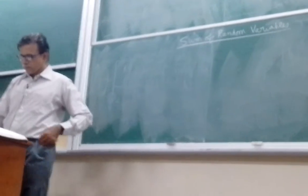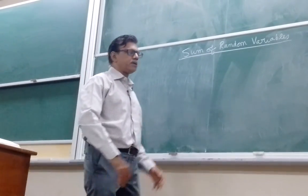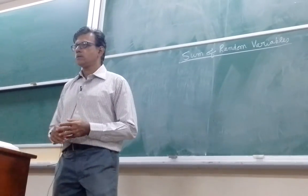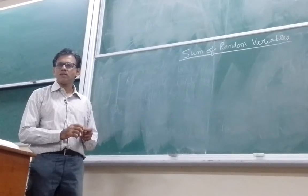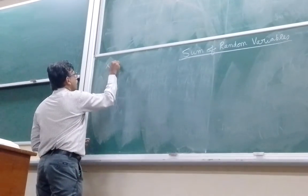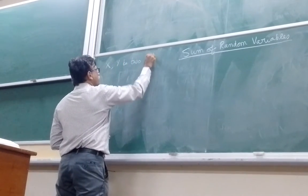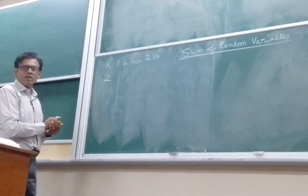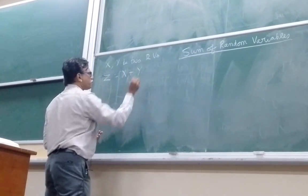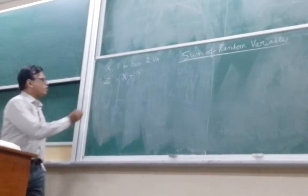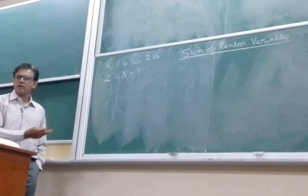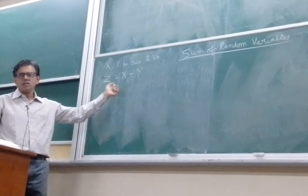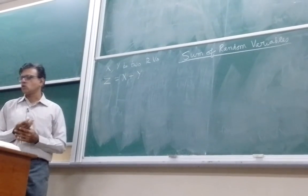We will begin this lecture with a topic related to functions of random variables. We will look at the single function of a single random variable, then two functions of two random variables. One important function is the sum of two random variables. Let X and Y be two random variables. We define random variable Z which is the sum X plus Y. Once we know how to characterize the sum of two random variables, the sum of many random variables can also be characterized.